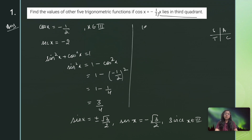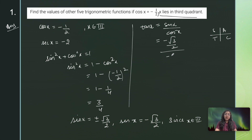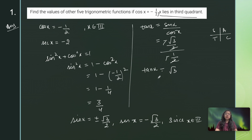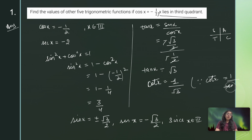Now that I have sin x and cos x, I can find tan x = sin x / cos x = (−√3/2) / (−1/2). The negatives cancel and the 2s cancel, giving tan x = √3. And cot x = 1/tan x = 1/√3. Both tan and cot are positive in the third quadrant, which is consistent.